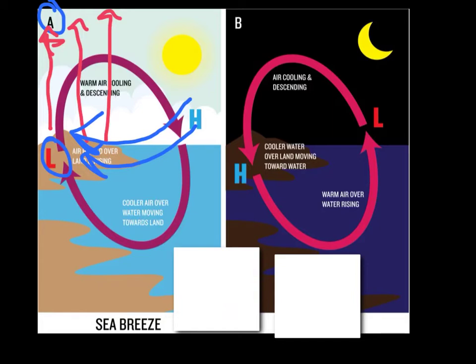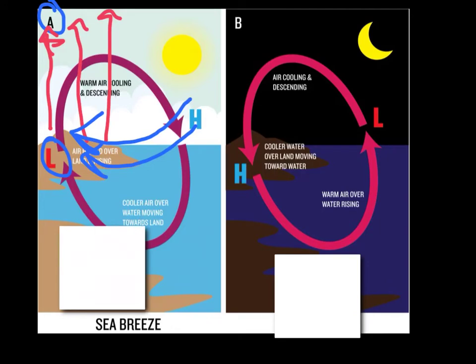That breeze moving off the water generally tends to feel a little bit colder than any breeze, because it's colder air than what is currently in play or in position. Again, you have air moving from an area of high pressure to an area of low pressure. The same thing happens at night with this same place.